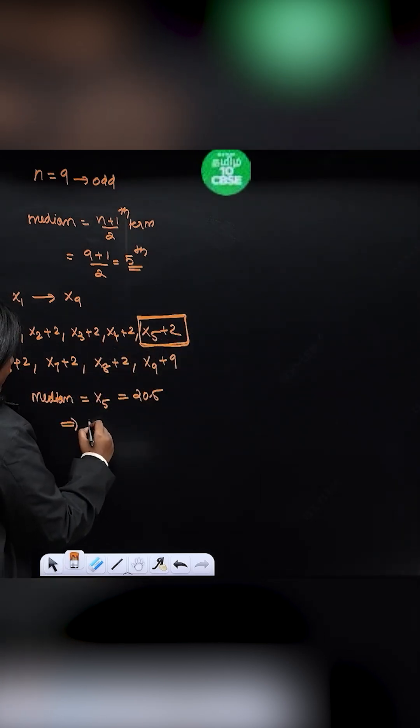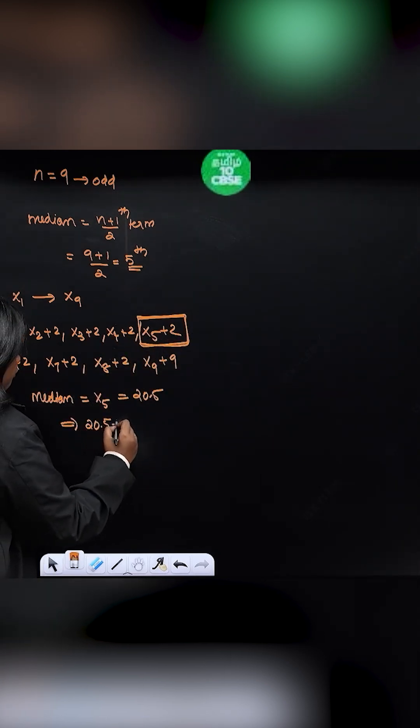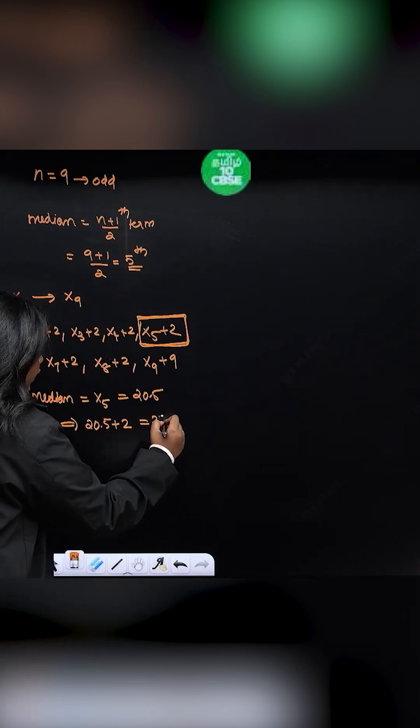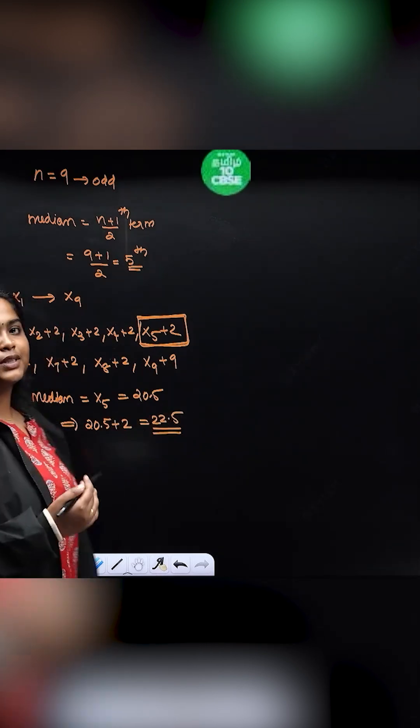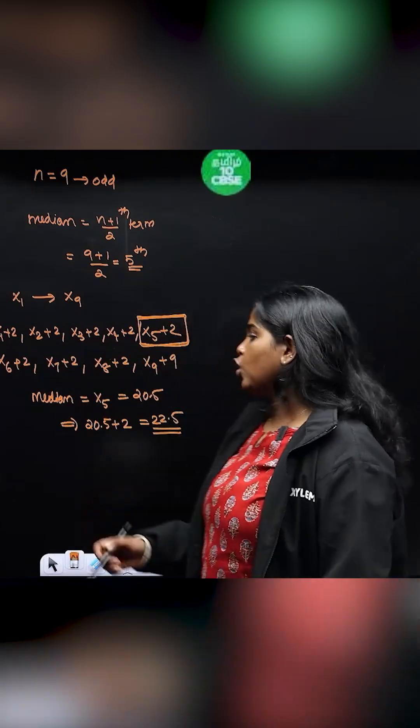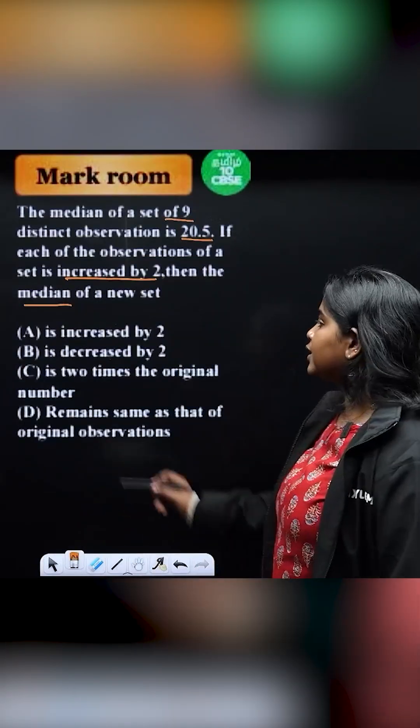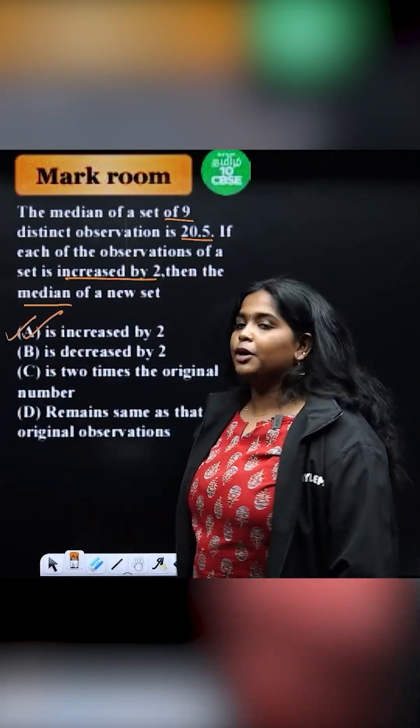So if you increase this, what will happen? Yes, 20.5 plus 2, that is equal to 22.5. So median is increased by 2. So here the option is, option A is increased by 2.